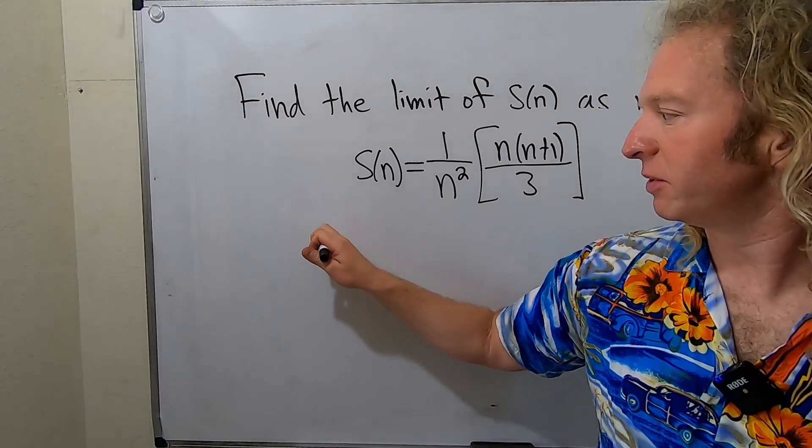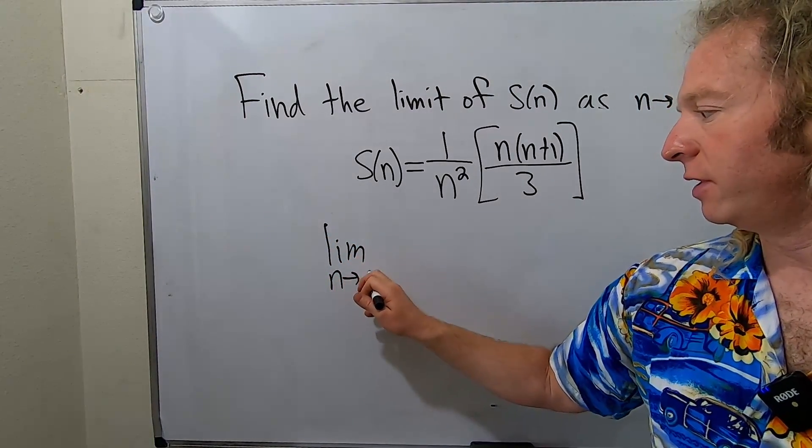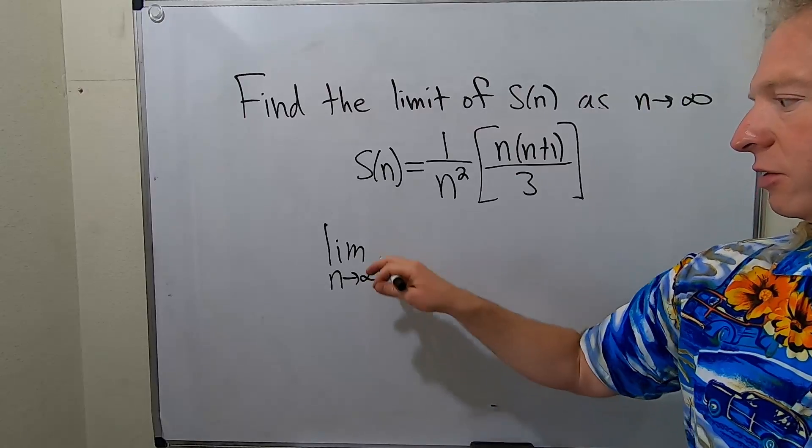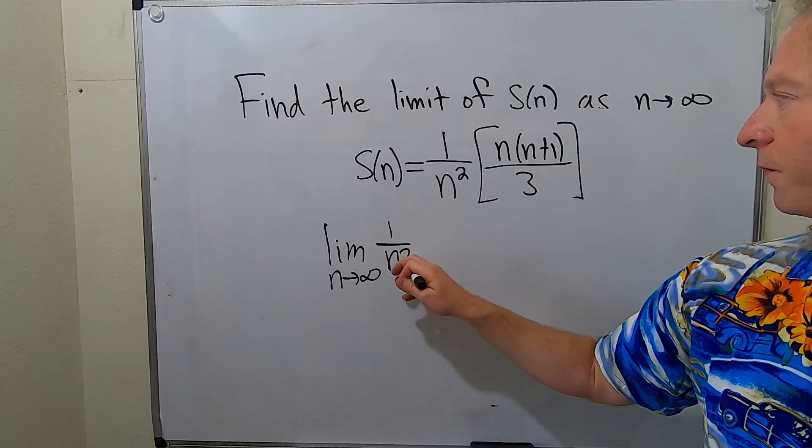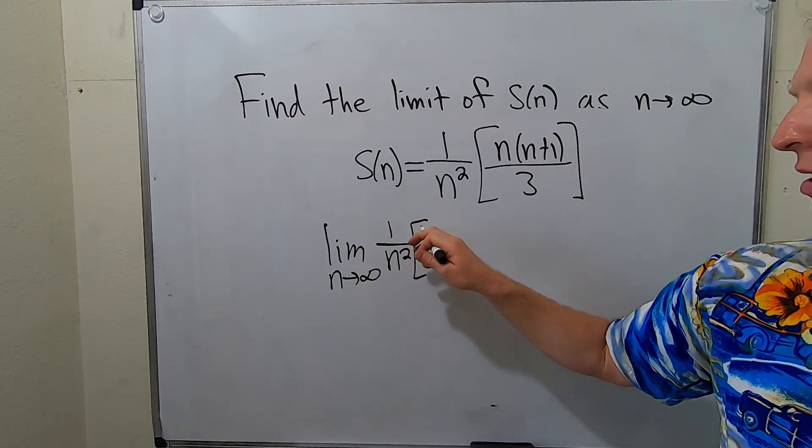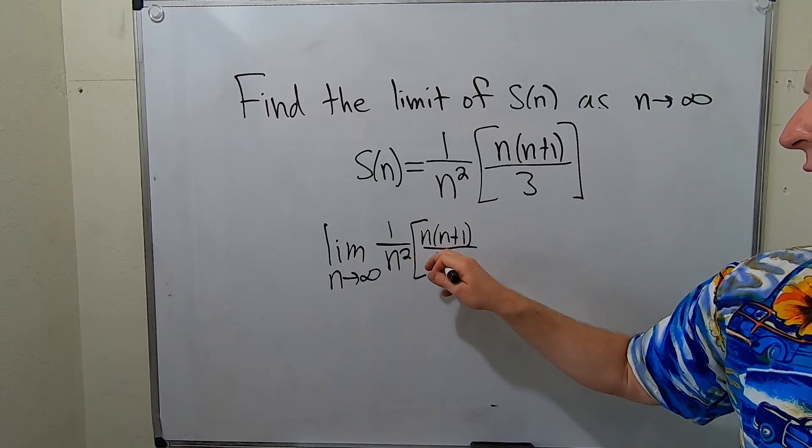Let me go ahead and write down the limit notation. So limit as n goes to infinity of this expression here. So 1 over n squared, I'll use the bracket n times n plus 1 all over 3.